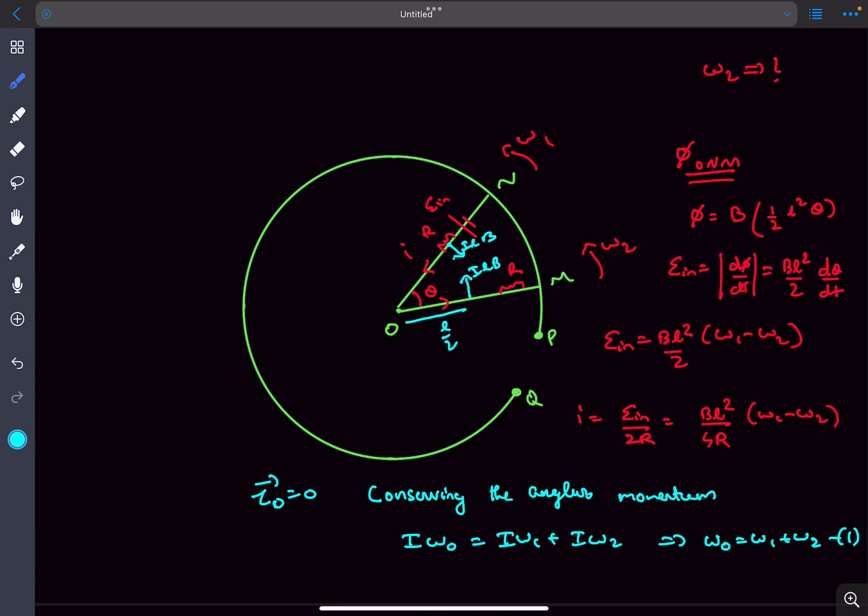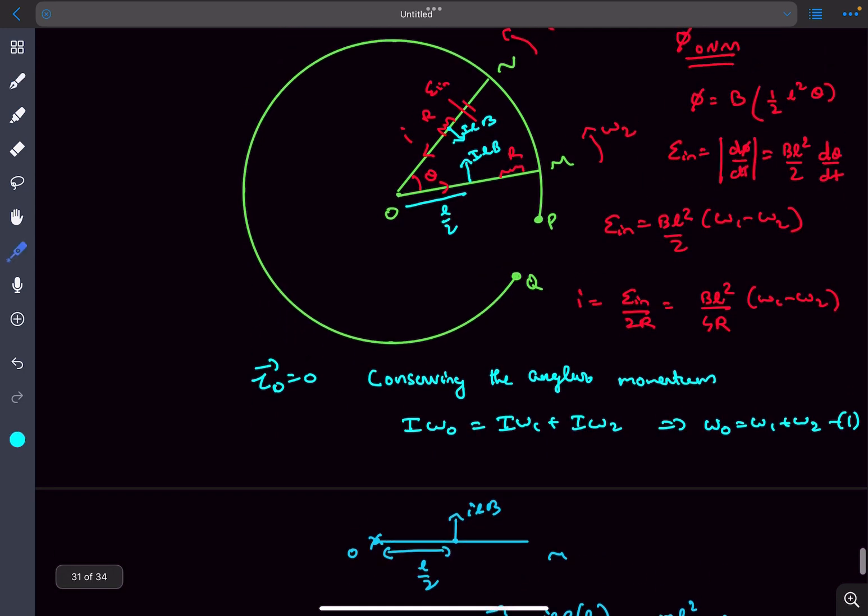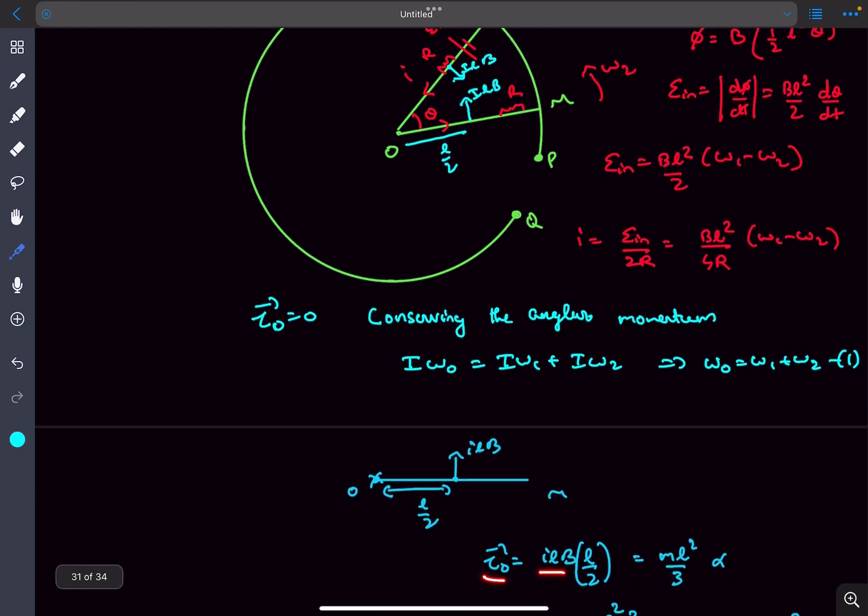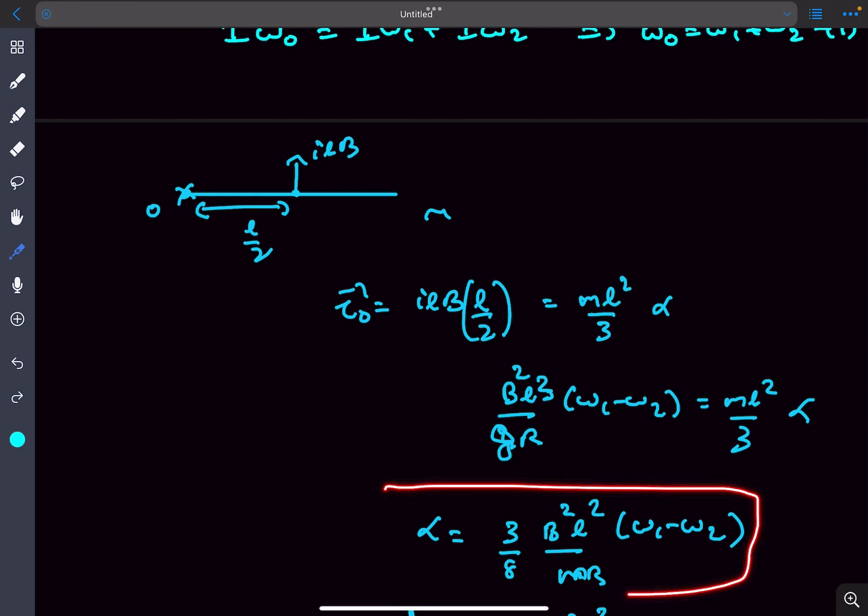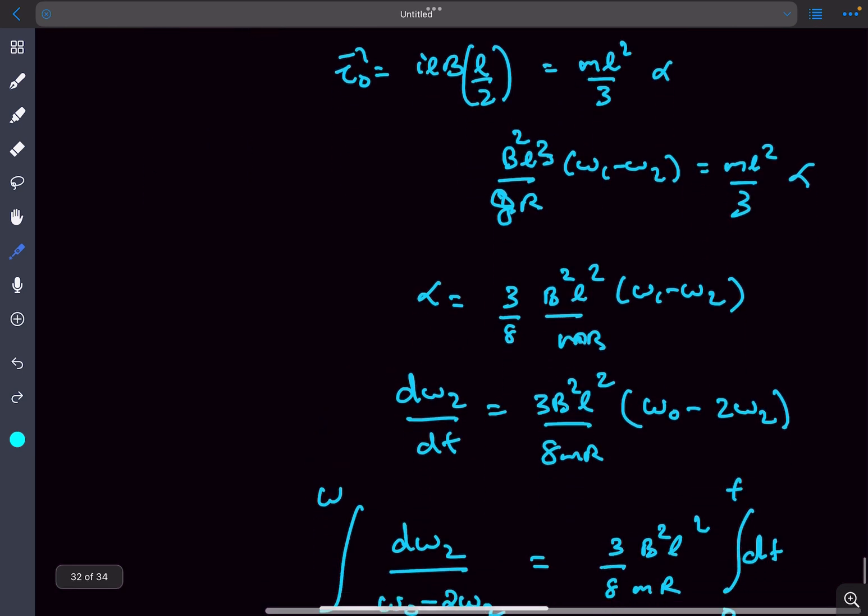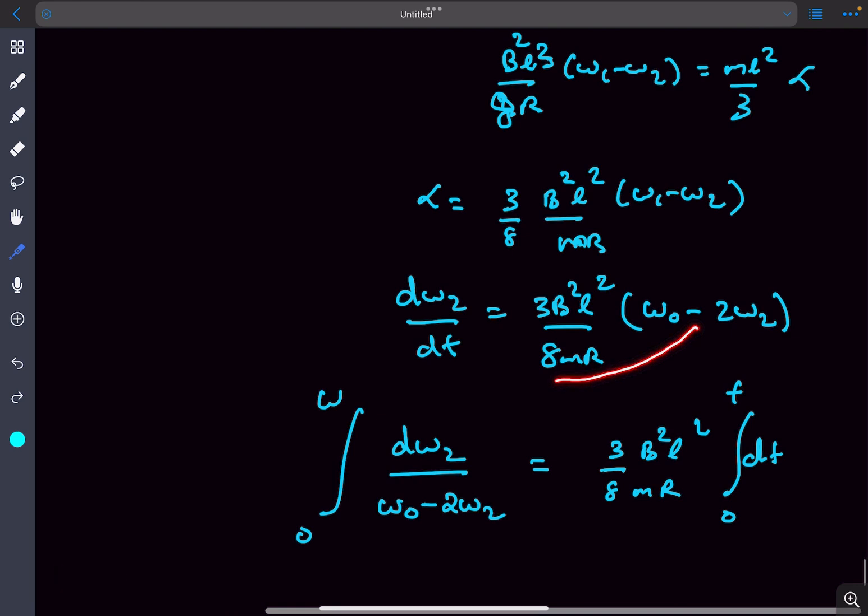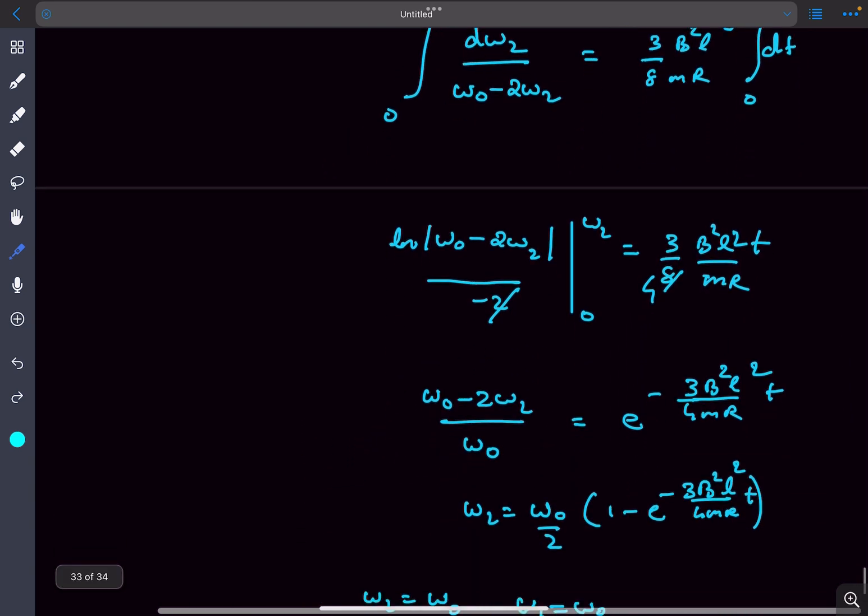Now we have to find omega 2 as a function of time. Let's write the torque equation for the rod OM. If we draw the FBD of the rod OM, the force ILB acts on the center of the rod. If I write the tau equals I alpha equation of the rod OM, the torque will be ILB times L by 2 and that will be equal to I times alpha. From here we'll get the alpha of rod 2 and alpha is simply d omega 2 by dt. Now we can eliminate omega 1 by writing it as omega naught minus omega 2 and after that we just have to separate the variables and integrate it on both sides to finally get omega as a function of time.